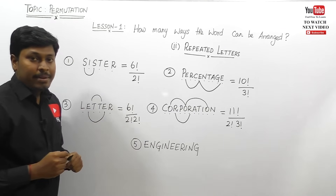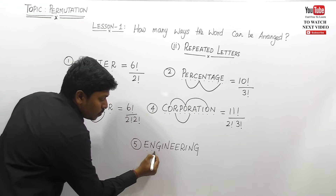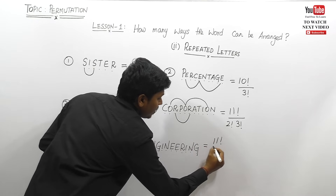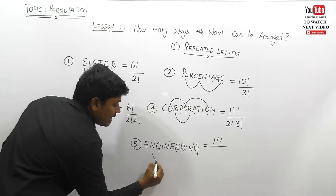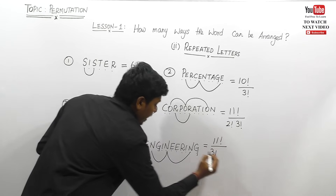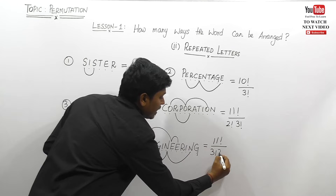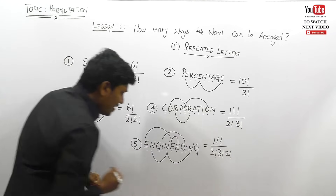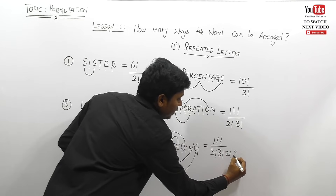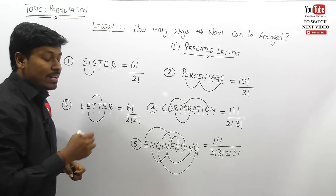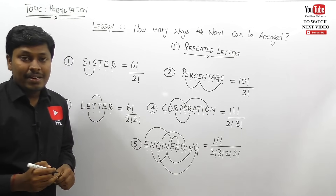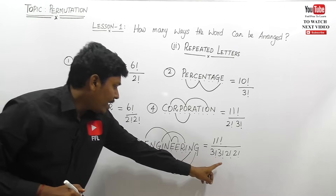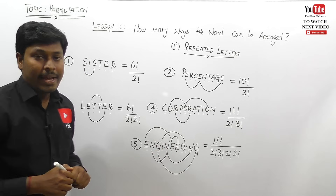Last example: how many ways can the word ENGINEERING be arranged? Count the letters — one through eleven — so eleven factorial. Check repeated letters: N appears three times, so three factorial; E appears three times, so three factorial; I appears two times, so two factorial; G appears two times, so two factorial. The final answer is eleven factorial divided by three factorial × three factorial × two factorial × two factorial.